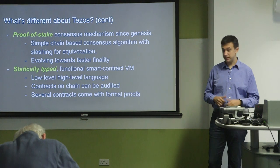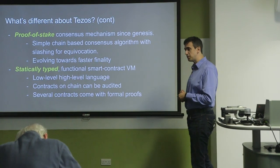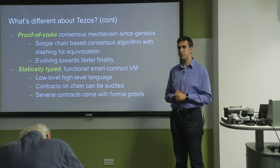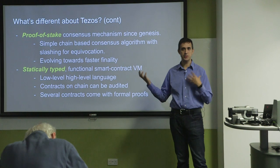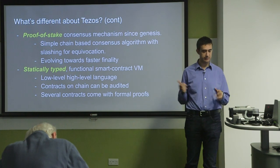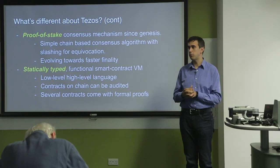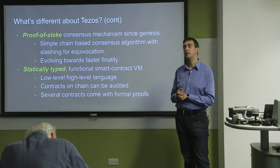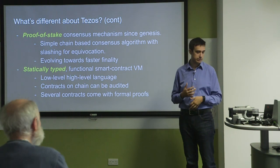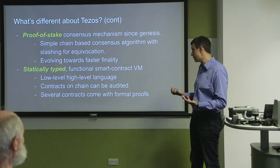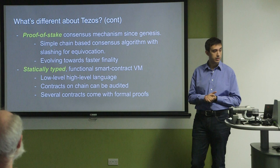What else is different about Tezos? I say there are kind of three pillars. The most important and defining one is self-amendment. But there are two others which are pretty interesting: proof of stake, and the smart contract languages.